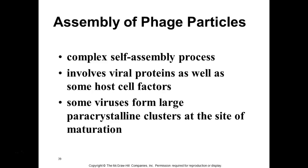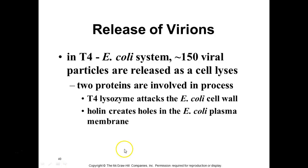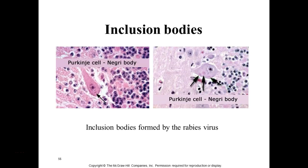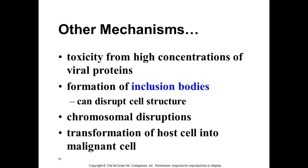Assembly is complex — it involves viral proteins as well as some host cell factors that actually aid in virus assembly. Some viruses form large paracrystalline structures at the site of maturation — a kind of scaffolding situation. Probably the best diagnostic example of that is rabies infection.